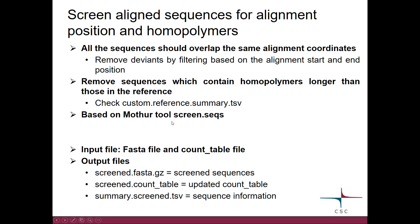You can check the longest homopolymer in the reference summary file. This tool is based on the Mothur tool ScreenSeqs — it's actually the same tool used earlier for screening the unaligned sequences. As you are doing this, the count table will be updated, so it's important to give it as input as well.